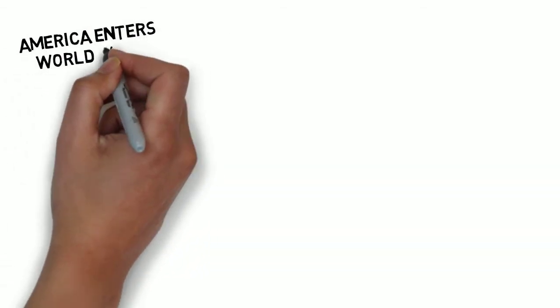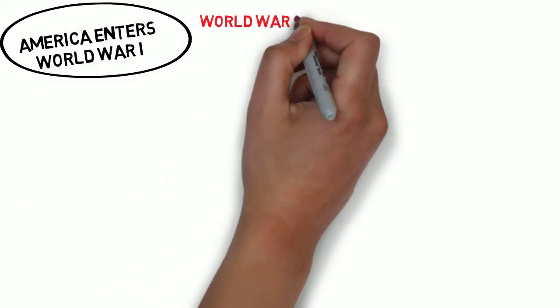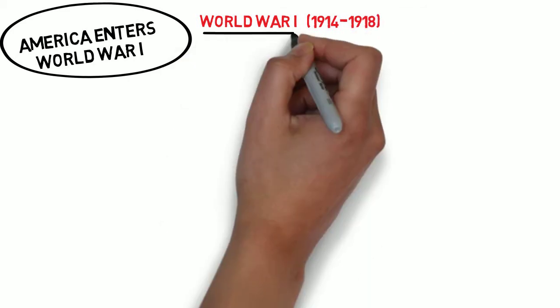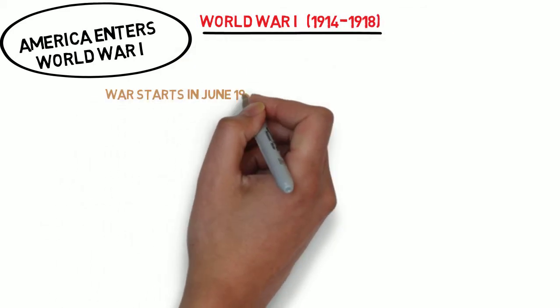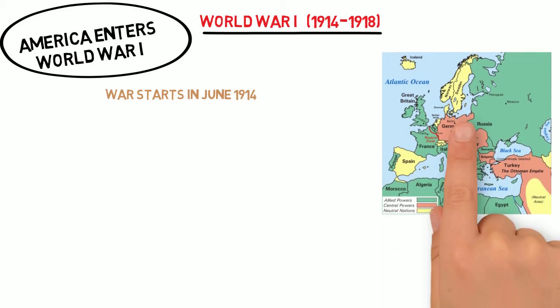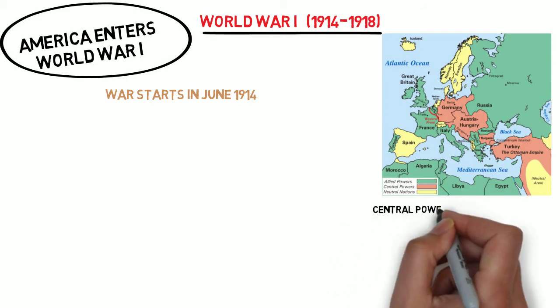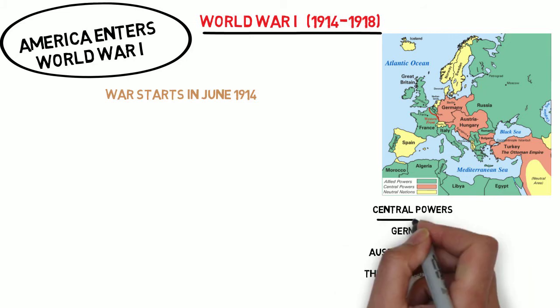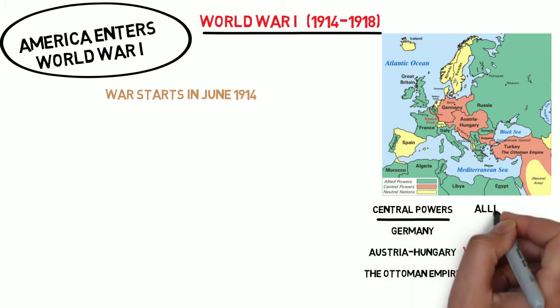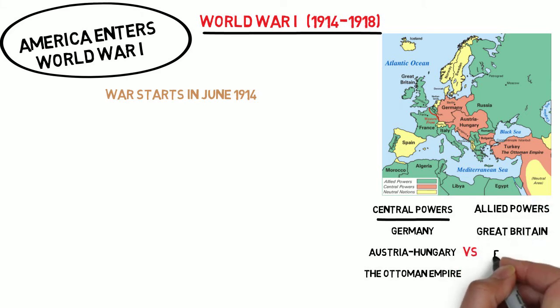World War I broke out in June 1914 after the assassination of Austria's Archduke Franz Ferdinand. Due to long-standing tension and a complicated system of military alliances, this one incident ignited mankind's deadliest conflict up to that point. The main combatant nations were the central powers of Germany, Austria-Hungary, and the Ottoman Empire against the allied nations of Great Britain, Russia, and France.